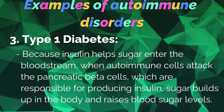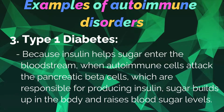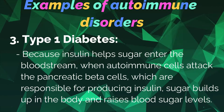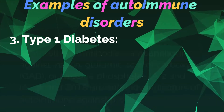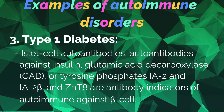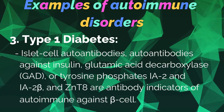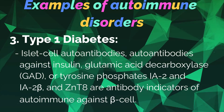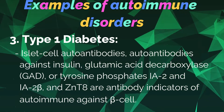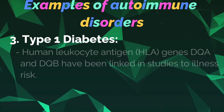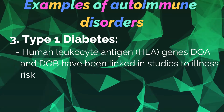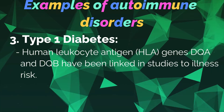Because insulin helps sugar enter the bloodstream, when autoimmune cells attack the pancreatic beta cells responsible for producing insulin, sugar builds up in the body and raises blood sugar levels. Autoantibodies include islet cell autoantibodies, autoantibodies against insulin, glutamic acid decarboxylase, tyrosine phosphatase IA-2 and IA-2 beta, and zinc T8. These are antibody indicators of autoimmunity against beta cells. Human leukocyte antigen HLA genes DQA and DQB have been linked in studies to illness risk.